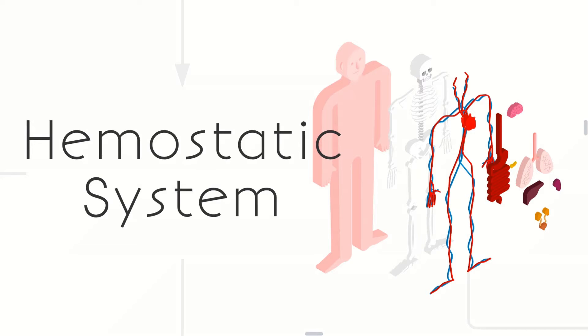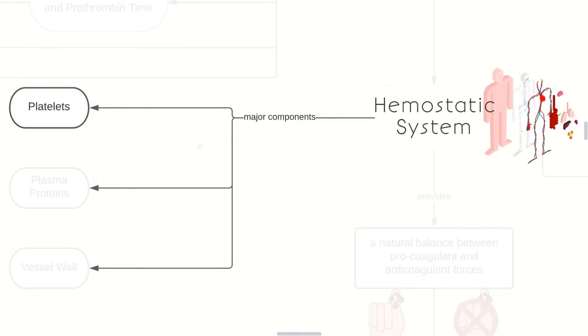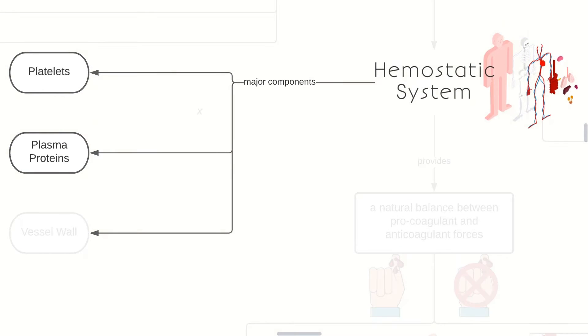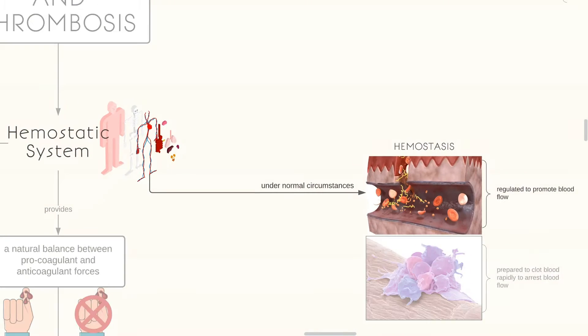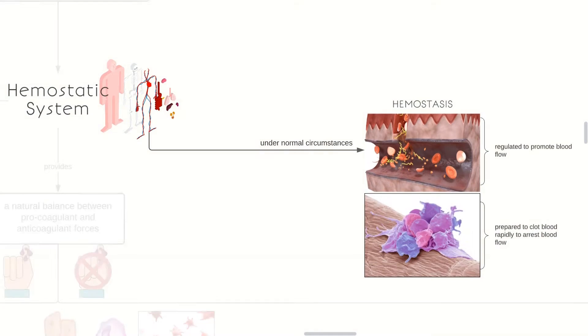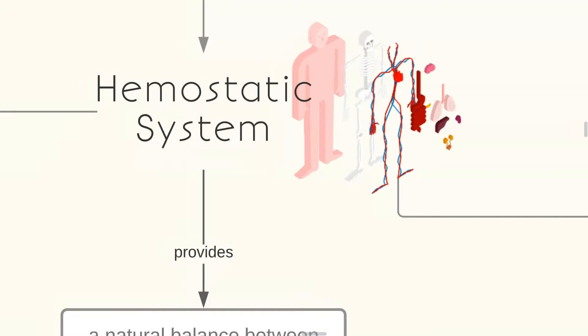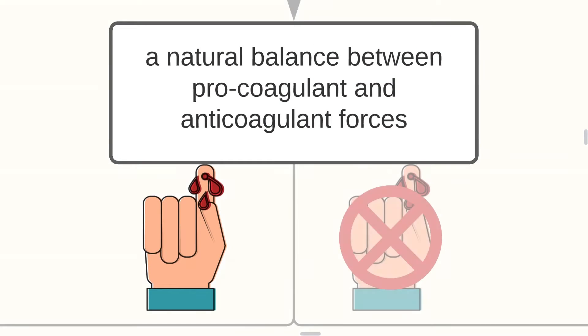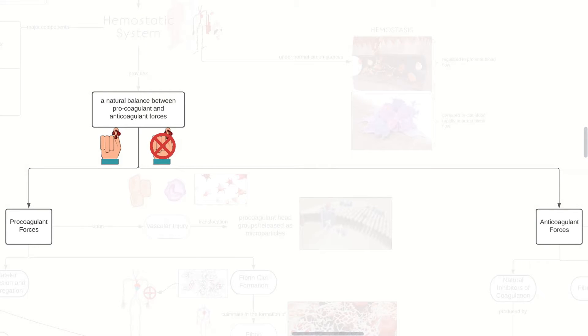Let's begin with our hemostatic system, with its particular components, namely the platelets, the plasma proteins, as well as the vessel wall. The hemostatic system, under normal circumstances, would promote hemostasis by regulating blood flow and being prepared to clot blood rapidly in order to arrest blood flow. The hemostatic system provides a natural balance between procoagulant and anticoagulant forces, as seen in this diagram.